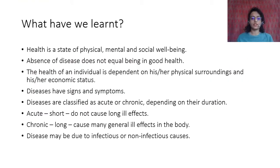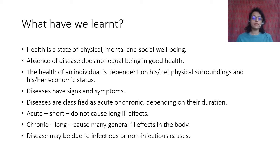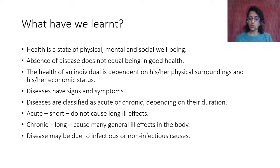This is what we learned in the first part: health is a state of physical, mental and social well-being. Absence of disease does not equal being in good health. The health of an individual is dependent on their physical surroundings and economic status. Diseases have signs and symptoms. Diseases are classified as acute or chronic depending on duration — acute are short-term with no long-term ill effects, and chronic are long-term diseases which may be due to infectious or non-infectious causes.